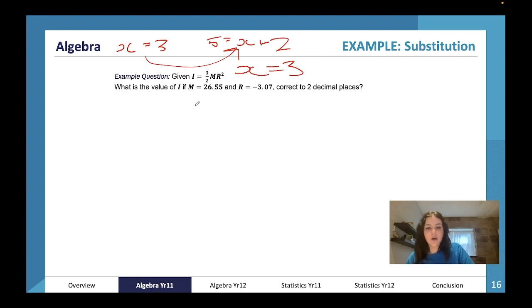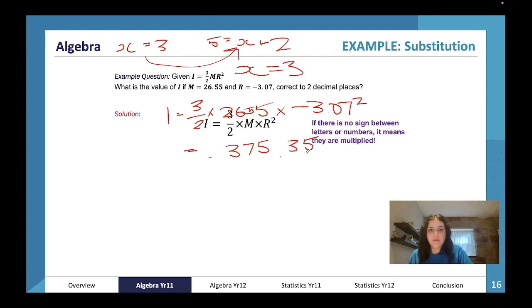Let's have a look at this example question. Given that I equals 3/2 times m times r squared, what is the value of I if m equals 26.55 and r equals negative 3.07, correct to two decimal places? So what I'm going to do is write out my formula: I equals 3/2 times m which is 26.55 times r which is negative 3.07 squared. And all I need to do from there is put that into my calculator.